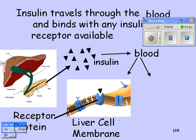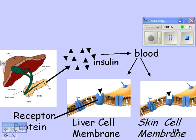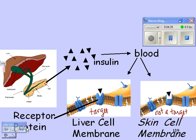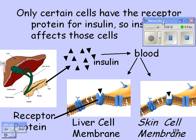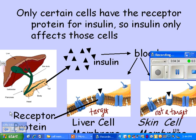Liver cells look like that, but if you look at skin cells, they don't have the right receptor. Their receptors are a different shape, so insulin doesn't really fit into the skin cell receptor. So skin is not affected by insulin. We would say the liver is a target of insulin, and the skin cells would not be a target cell because they're not affected by insulin — they just don't have the right receptors.